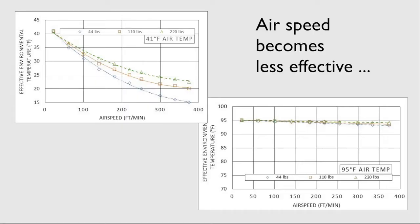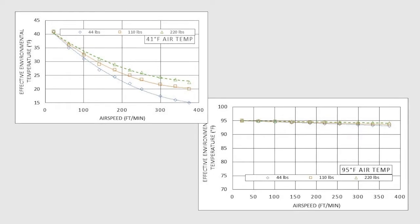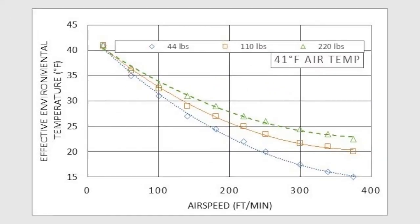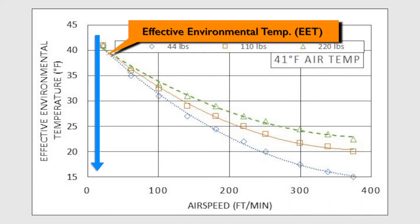Unfortunately, air speed becomes less effective as a cooling method as ambient temperatures get hotter, as these two graphs show. In the first graph, the ambient temperature outside the swine barn is cooler, 41 degrees Fahrenheit. As the air speed increases from 100 to 200 to 300 feet per minute and higher, there is a dramatic decrease in the effective environmental temperature, or EET.